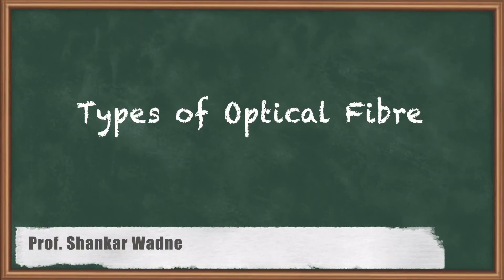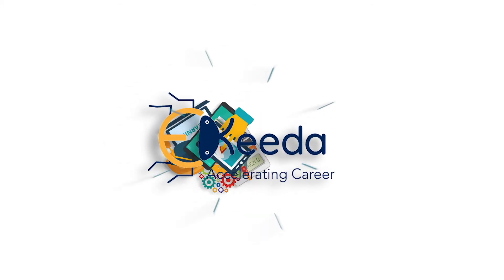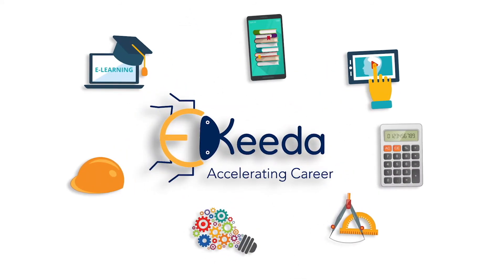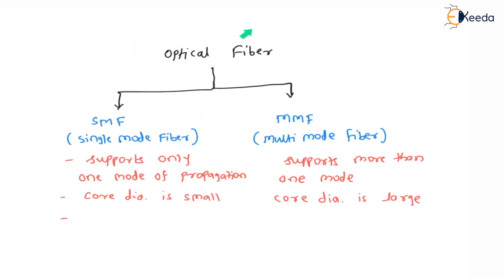Hello my dear students, today we will see the different types of optical fibers. Optical fibers are classified according to the different types of modes of propagation, then according to the material used for manufacturing, and then we have another classification based on its working.